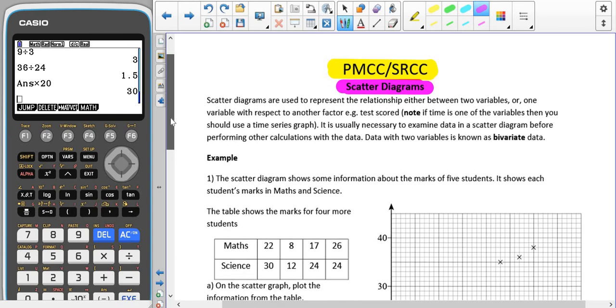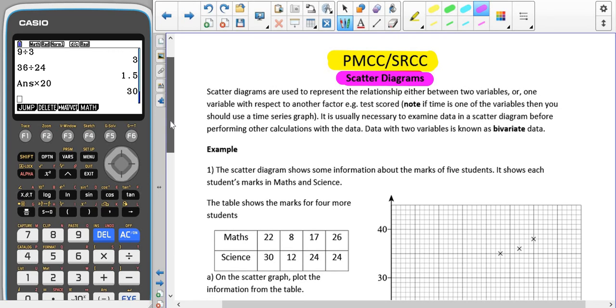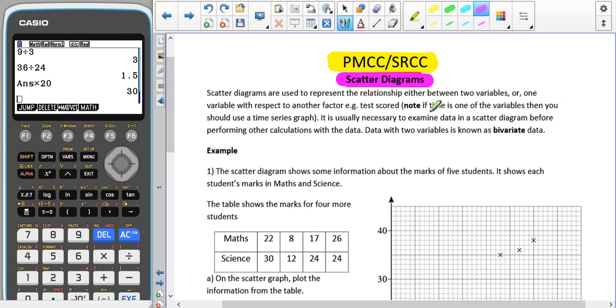Scatter diagrams are used to represent relationships between two variables, one variable with respect to another factor, for instance two test scores. Note, if one of the variables is time, then you should use a time series graph instead. So that's very important to note that neither of the two variables is time. It is usually necessary to examine data in a scatter diagram before you can perform other calculations with the data.